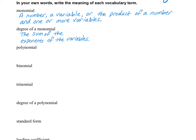The degree of a monomial is different than the degree of the polynomial, which we'll see later. Here I have four examples of monomials. If I want to find the degree of the monomial, I need to look at the variables. If you look at 3x, there is no exponent on that variable, which means there's an invisible one there. So the degree of this monomial is one.